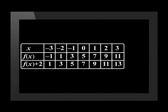Let us shift function f 2 units up. All the y values would move 2 units up, but the x values remain the same. The coordinates for f shifted 2 units up are negative 3, 1, negative 2, 3, negative 1, 5, 0, 7, 1, 9, 2, 11, 3, 13. Do you see how all the values in the last row are 2 more than in the second row?